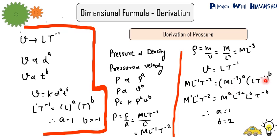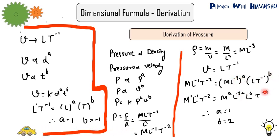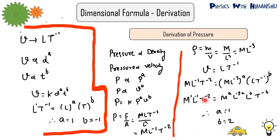Substituting all dimensions: M L minus 1 T minus 2 equals M raised to power A, L raised to power minus 3A, L raised to power B, and T raised to power minus B. Equating powers of M gives A equals 1. Equating powers of T gives minus B equals minus 2, so B equals 2. Therefore, in the formula for pressure, the power of density is 1 and the power of velocity is 2.